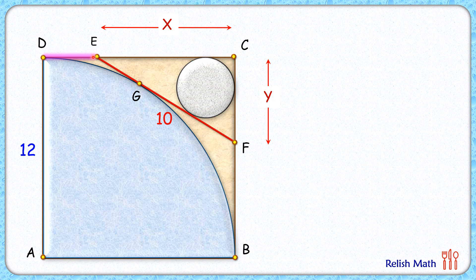From external point E two tangents are drawn, ED and EG, so they will be equal in length and thus the length EG is 12 minus x. Now same way here if we'll see the length FB, that will be the full length 12 minus y.